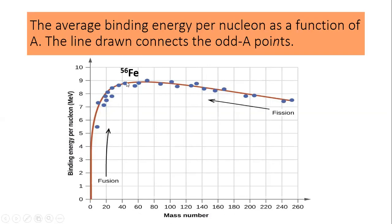This graph also illustrates two important nuclear processes. Lighter nuclei tend to join together to form heavier nuclei, moving toward iron-56 — this process is called fusion. Heavier nuclei beyond iron-56 tend to split into lighter nuclei, also moving toward iron-56 — this is called fission. So before iron-56 the tendency is fusion, and after iron-56 the tendency is fission, as nuclei move toward maximum stability at iron-56.